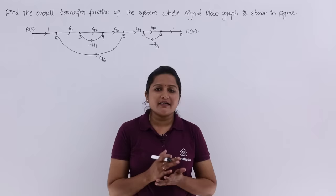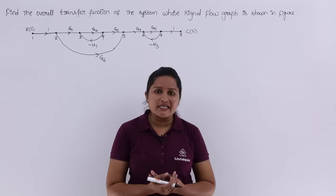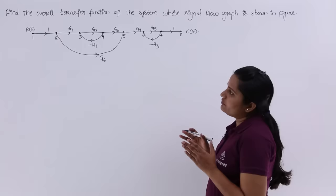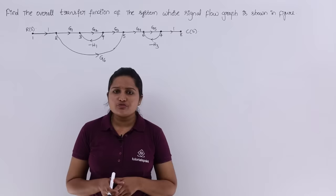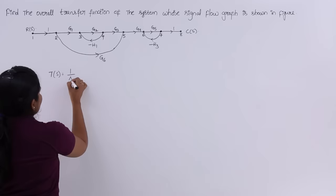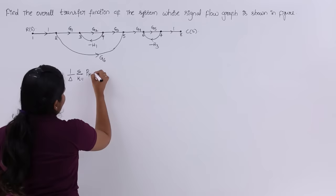In this video we are going to solve a signal flow graph and find out the overall gain or transfer function. So this is the signal flow graph given and we need to find the overall transfer function. Whenever we are asked to find the transfer function of a signal flow graph, we use Mason's Gain Formula: T(s) = (1/Δ) × Σ(k=1 to m) Pk·Δk.